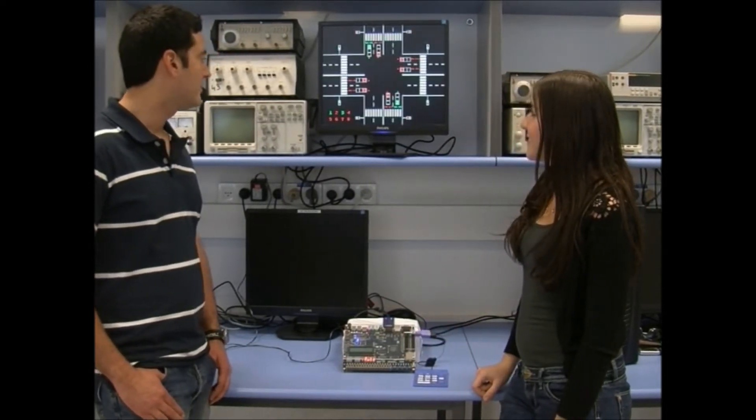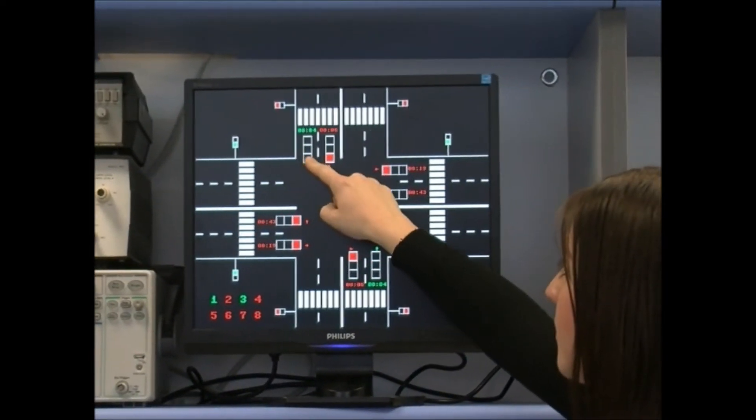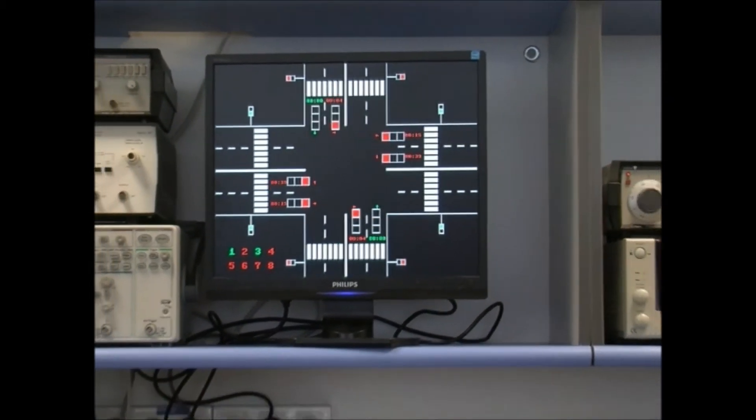We can see now that Traffic Lights 3 and Number 1 are enabled for 10 seconds on the secondary road.